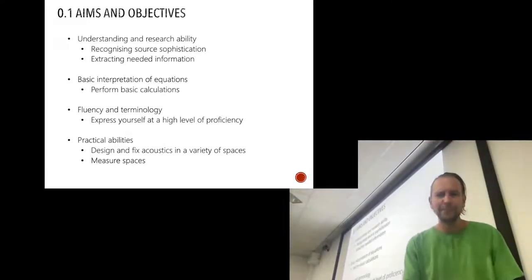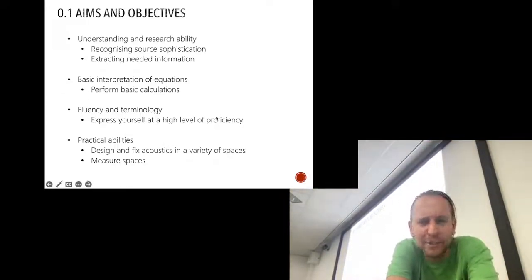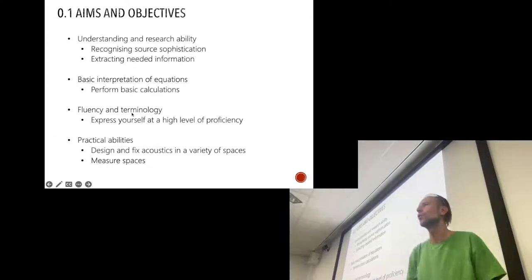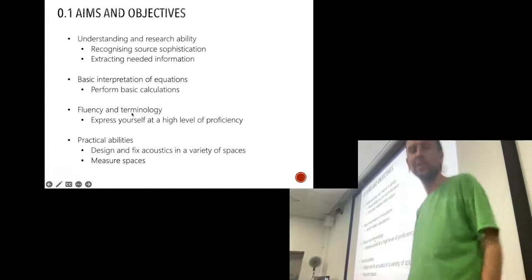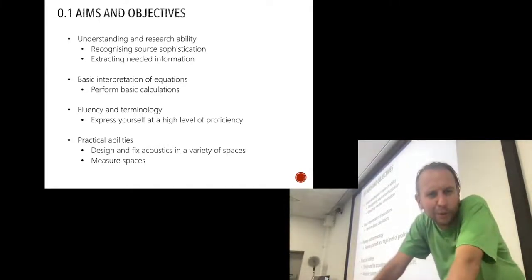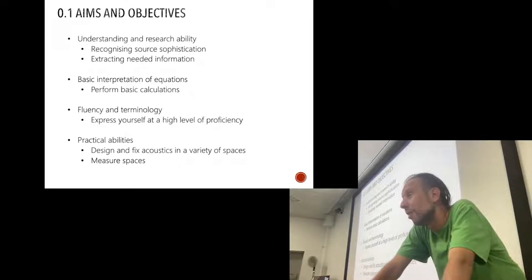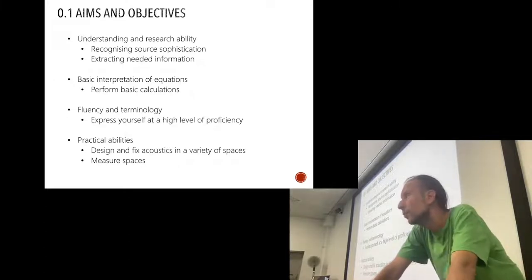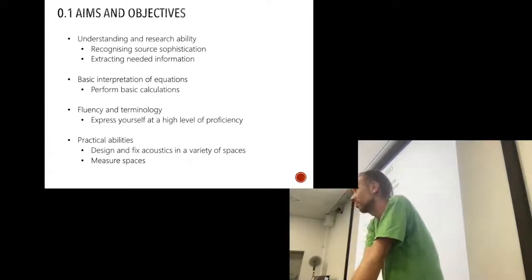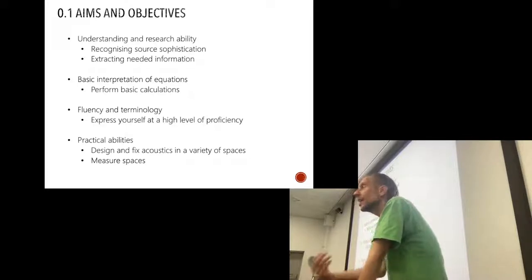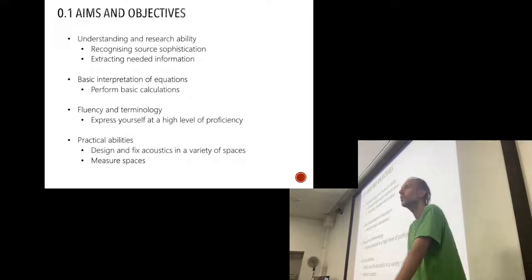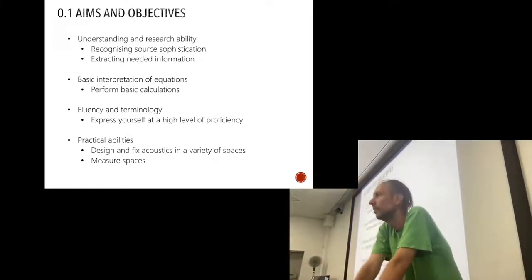Let's get on with stuff. Understanding and research ability — the most important thing is to distinguish marketing from science. How do you do that? Take me as an example: am I trying to sell you something, or am I an actual scientist? Check my funding — what does it tell you? But actually, I don't have a checking mechanism really. How do you test what I say if you don't know what I'm saying?